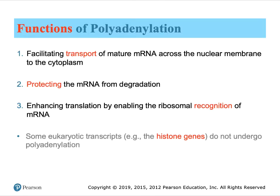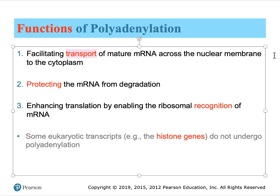Why did evolution generate poly-A tails at the 3' end of mature messenger RNA? One reason is to enable transport across nuclear pores into the cytoplasm. The second is to protect that end from dangerous enzymes present in the cytosol. Third, to enhance translation by enabling ribosomal recognition of messenger RNA, similar to the 5' end. Many authors believe the length of the poly-A tail is proportional to the life expectancy of that messenger RNA in the cytosol — the longer the tail, the more likely it is to survive. Not all genes undergo polyadenylation; histone genes are not subject to this process.